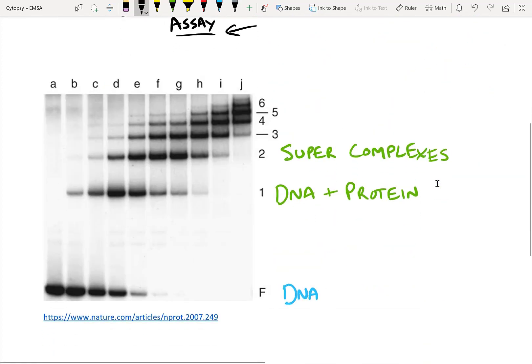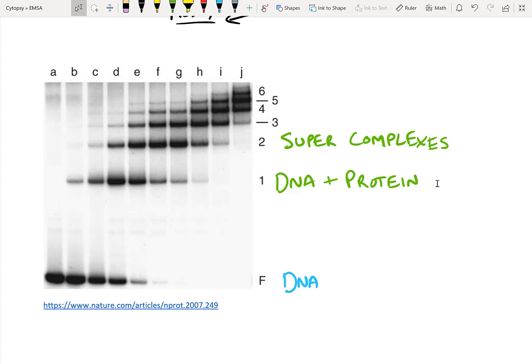At the end of EMSA, what you end up with is a gel that looks like this. Here, your DNA ends up being at the bottom. Your DNA is the smallest thing that you're running on your gel and it travels the furthest. If you don't understand why this is the case, make sure you review how electrophoresis and gel electrophoresis work in my other videos.